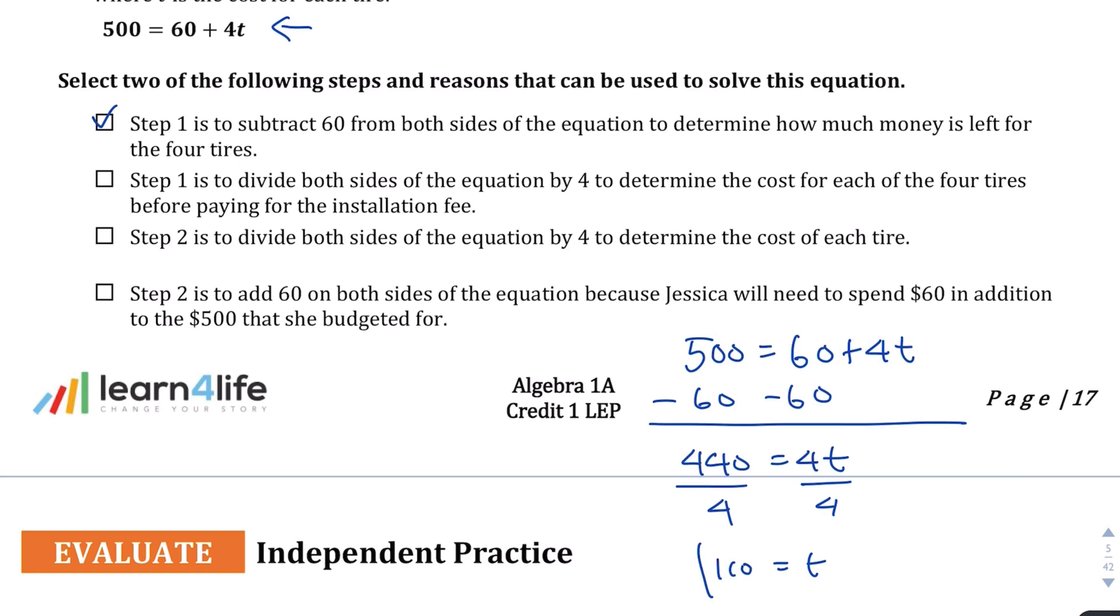Step 1 is to divide both sides of the equation by 4 to determine the cost of each of the four tires before paying for the installation fee. You could do that, but probably not the best step. So let's take a look at the other ones.